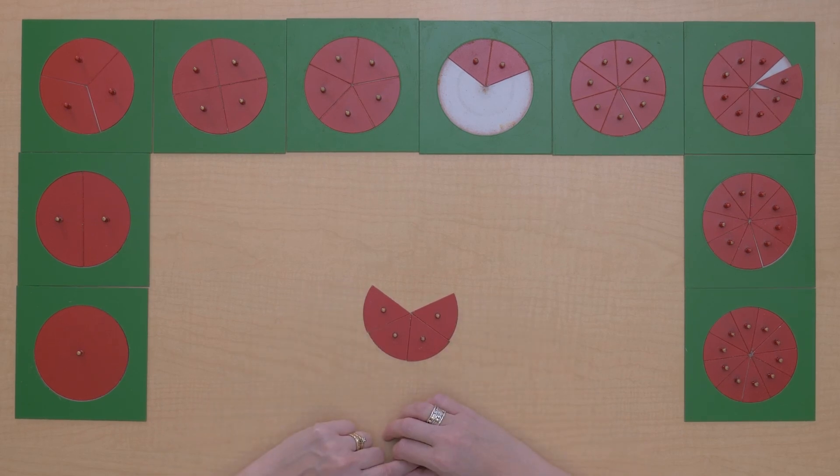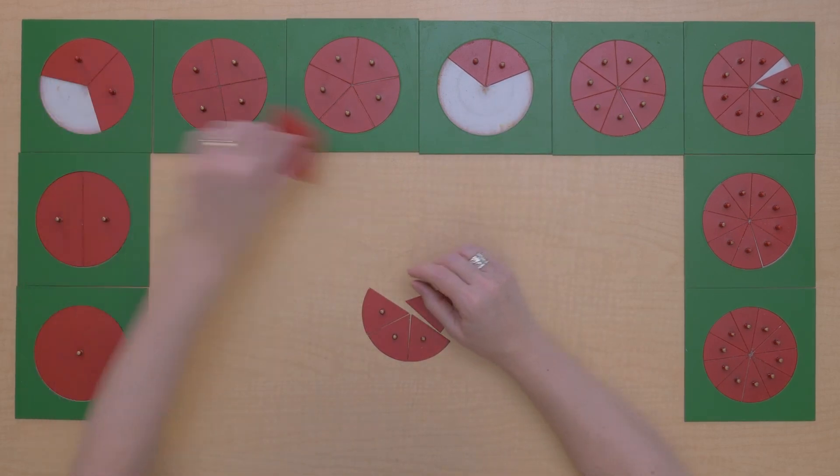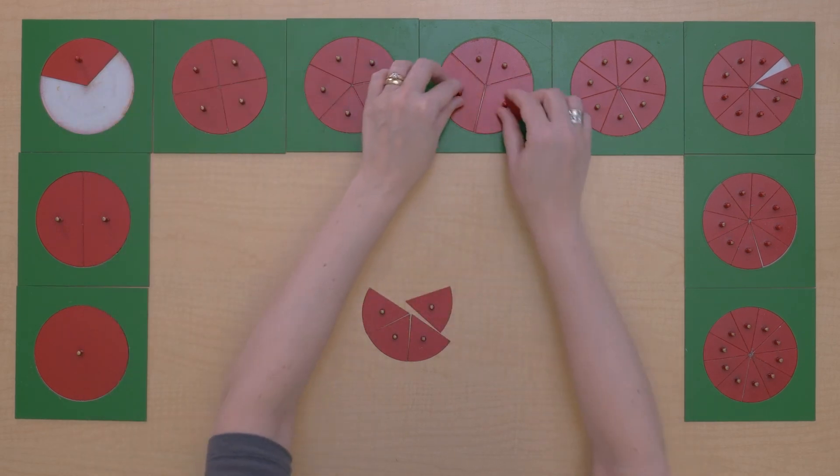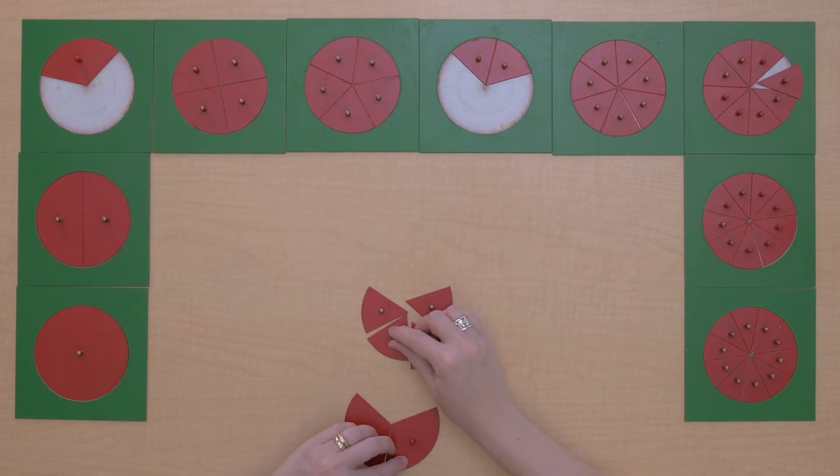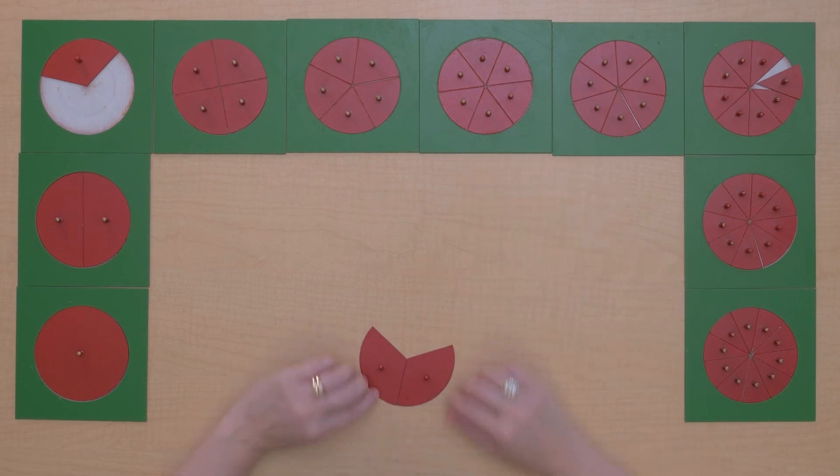Is that lowest terms? No, it's not. Let's find an equivalent fraction. Ah yes, two-thirds. So one-third plus two-sixths equals two-thirds.